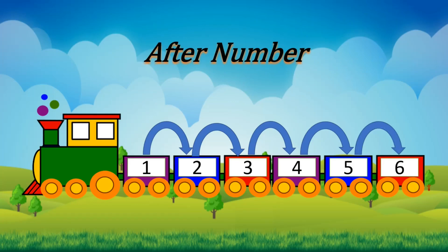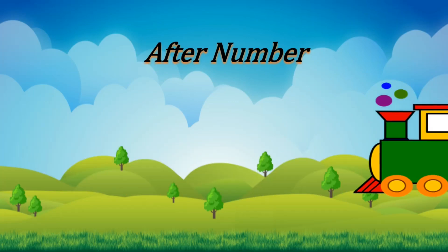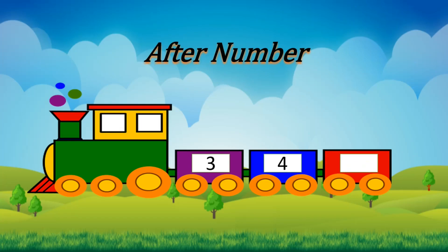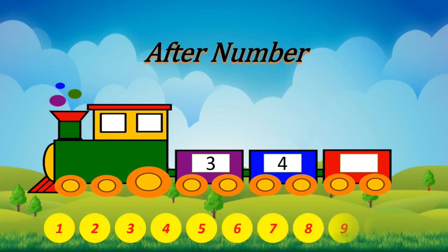Kids, now let's see examples. Here we have number 3. What number comes after 3? It's number 4. Kids, can you find what number comes after 4? Yes, very good — it's number 5.